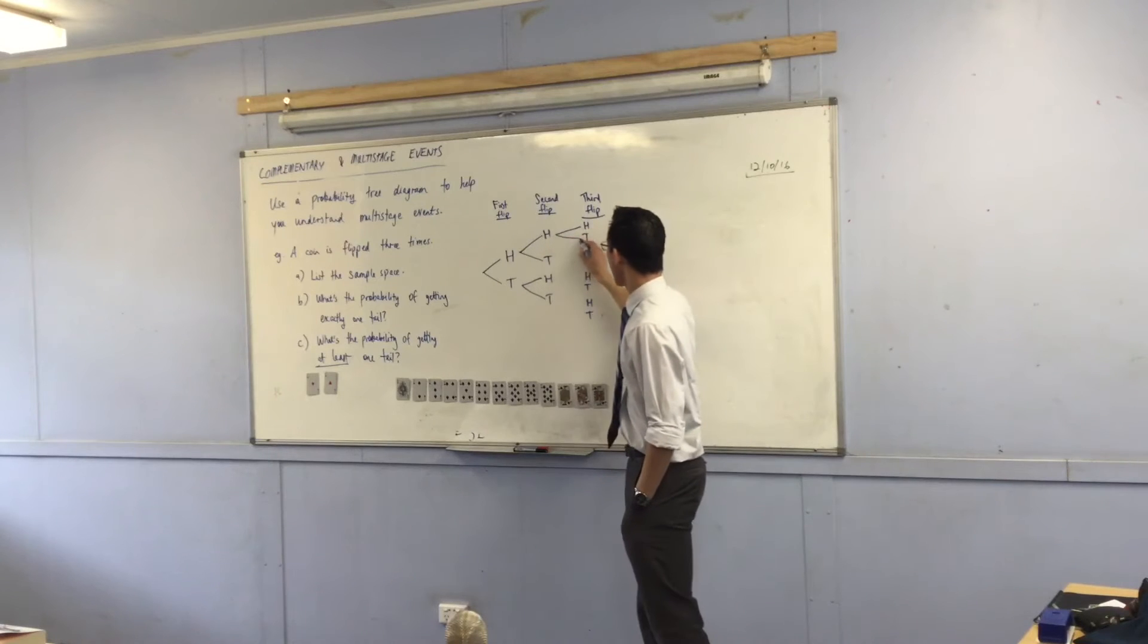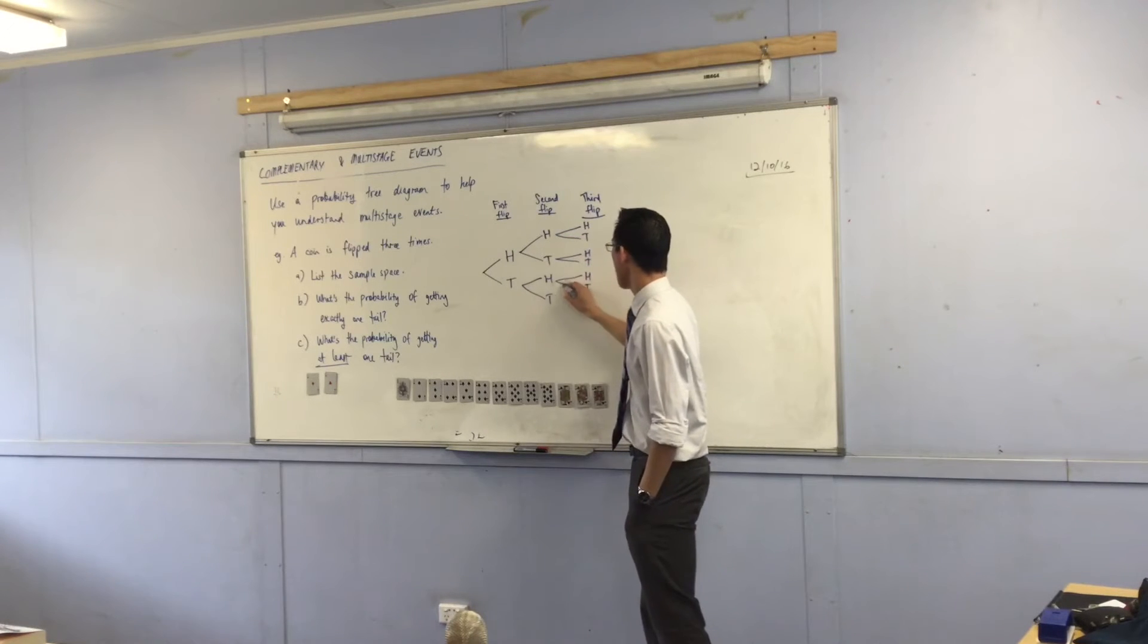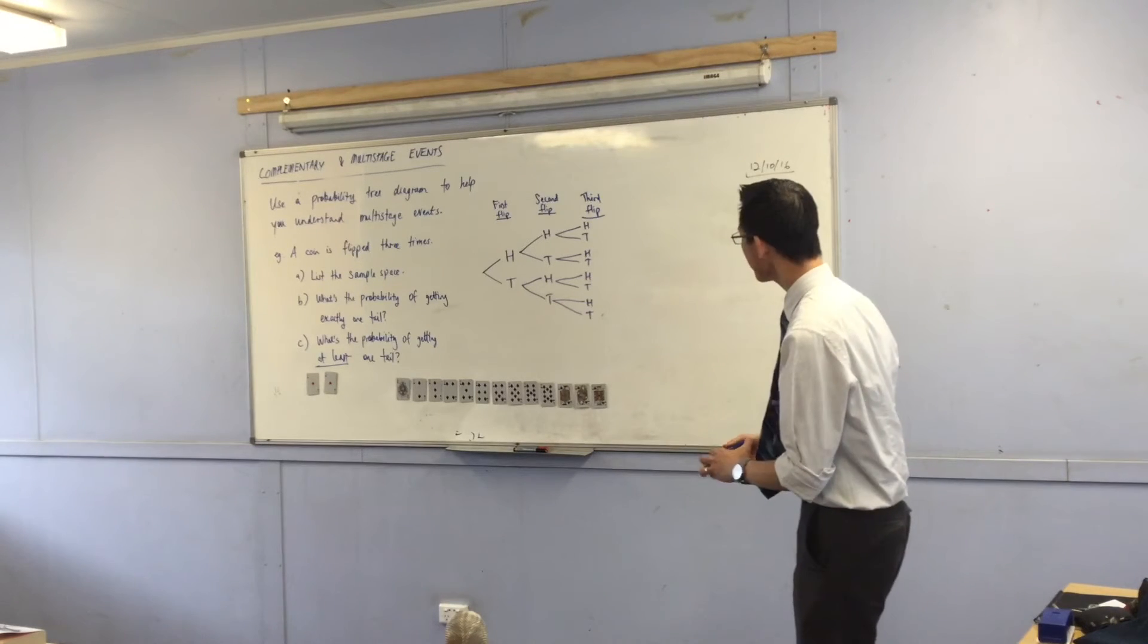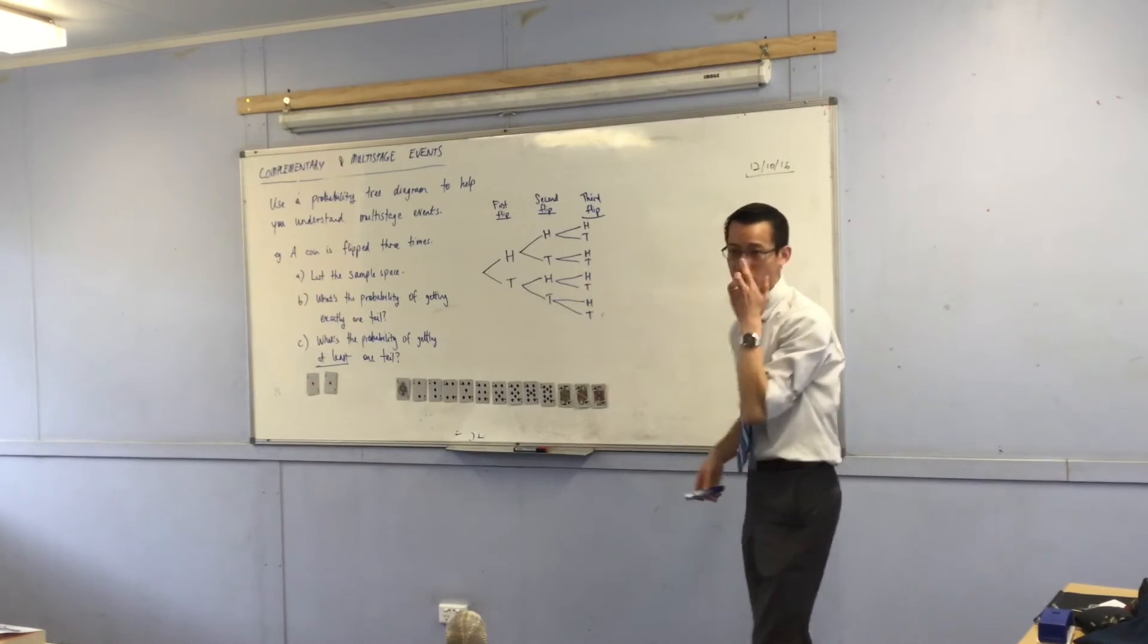You can see each of these branches off from one of the outcomes in the previous stage. So this is my probability tree diagram.